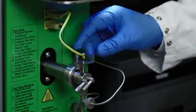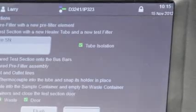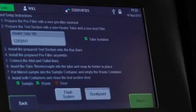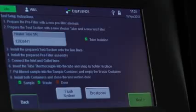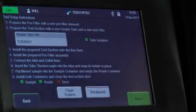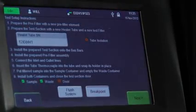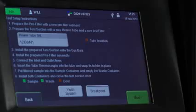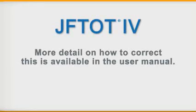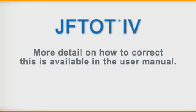Insert the heater tube thermocouple completely into the hole in the top of the heater tube and slide the holder over to hold the thermocouple in place. Check the status of the tube isolation. If there is an electrical short between the heater tube and test section, you'll be able to see this on the screen. If you see this indicator, you'll need to correct it before moving to the next step. More detail on how to correct this is available in the user manual.